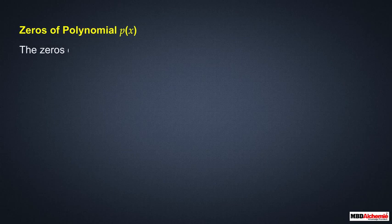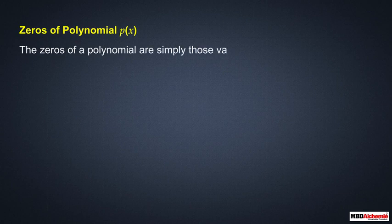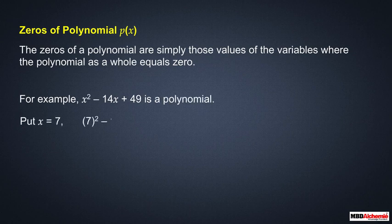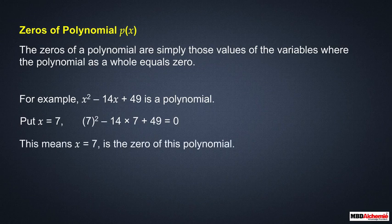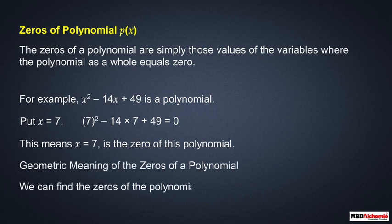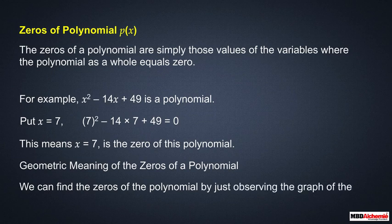We have already learned about the zeros of a polynomial p(x). The zeros of a polynomial are simply those values of the variable where the polynomial equals zero. For example, for x² − 14x + 49, if we put x = 7 we get zero, so x = 7 is the zero of this polynomial. We can find the zeros of a polynomial by observing the graph of the polynomial.